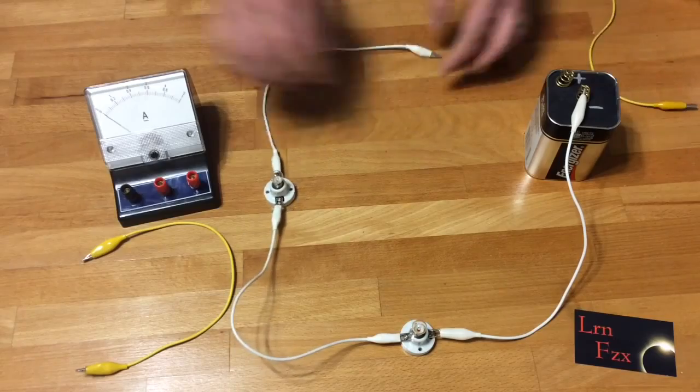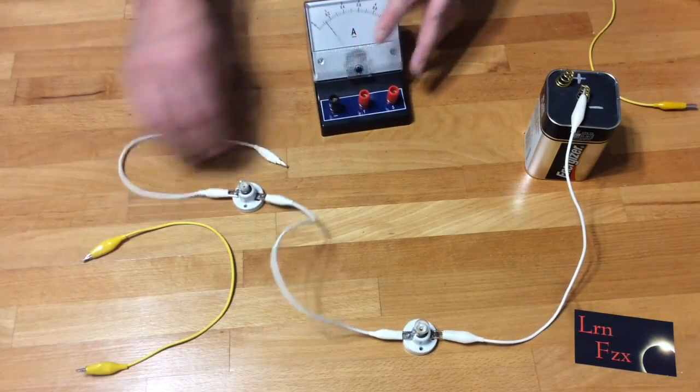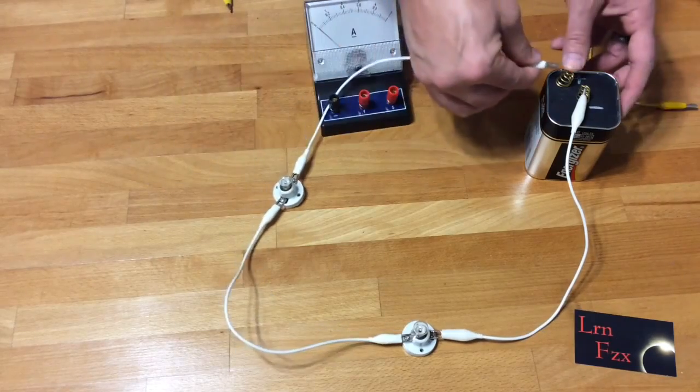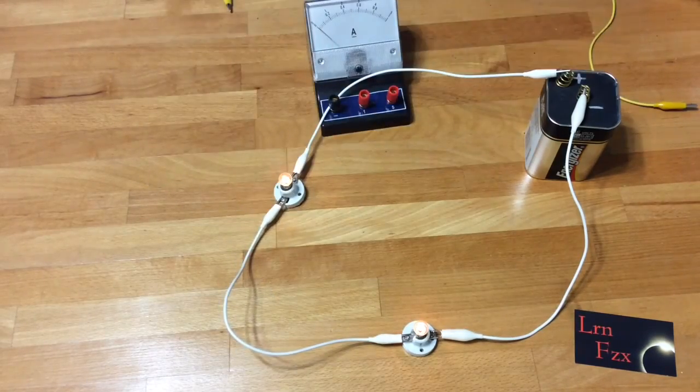From the positive terminal, disconnect to measure the current flowing from the positive terminal of the battery. Reconnect the original circuit shown by the white wires.